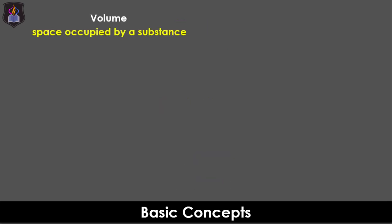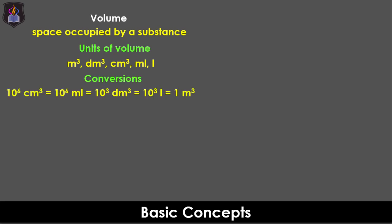Volume is the space occupied by a substance and is measured in meters cubed, decimeters cubed, cm cubed, millimeters cubed, mils, and liter. To convert from one unit to another, you can use the relationship 1,000,000 cm³ equivalent to 1,000,000 mls, equivalent to 1,000 dm³, equivalent to 1,000 liters, equivalent to 1 meter cubed.